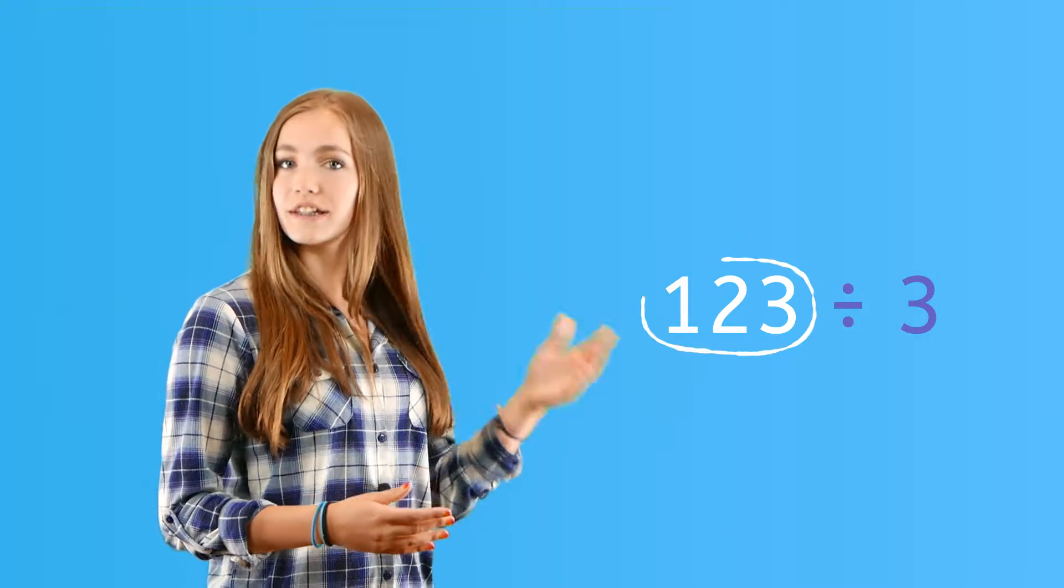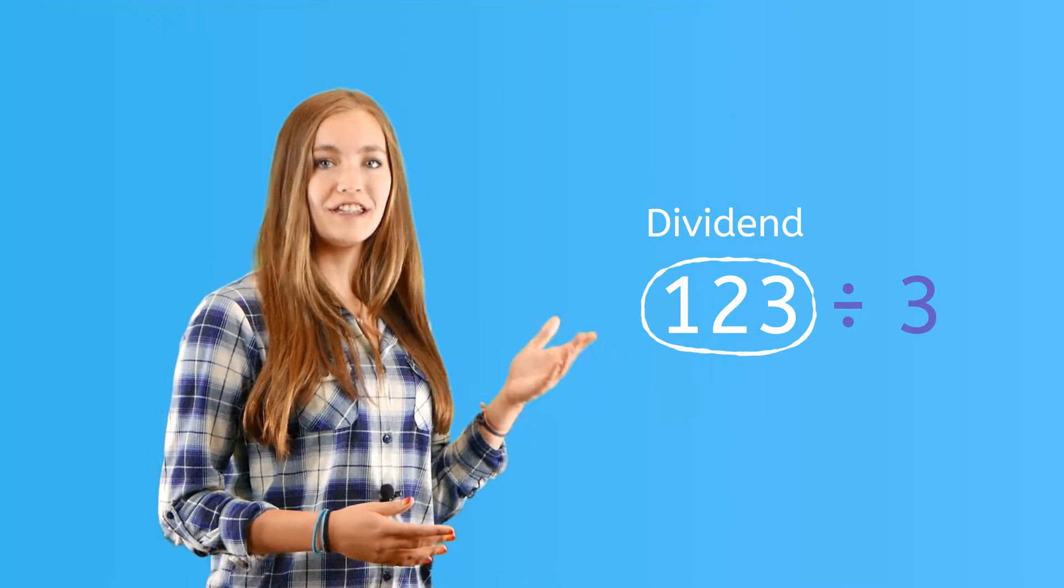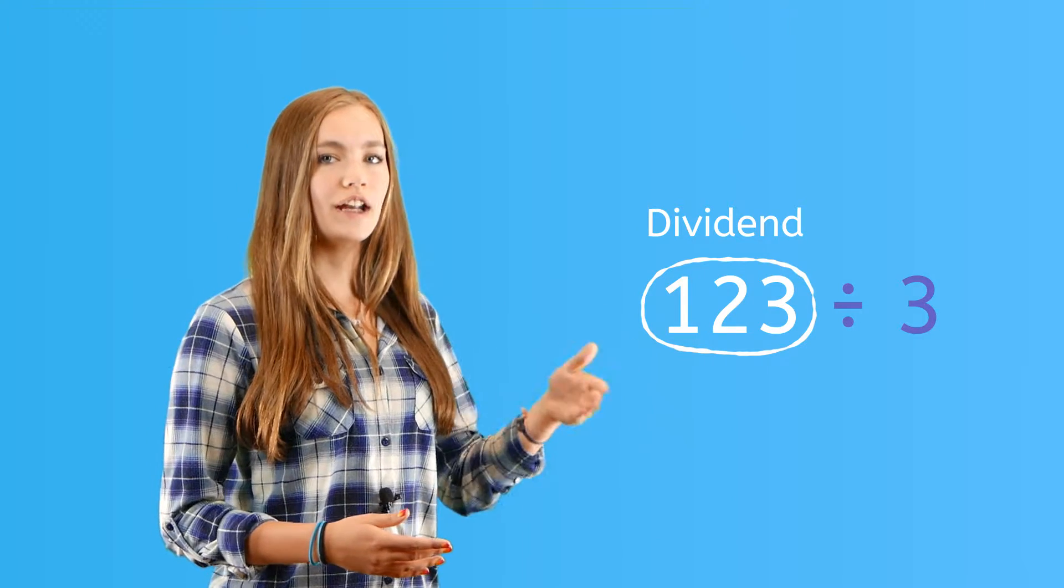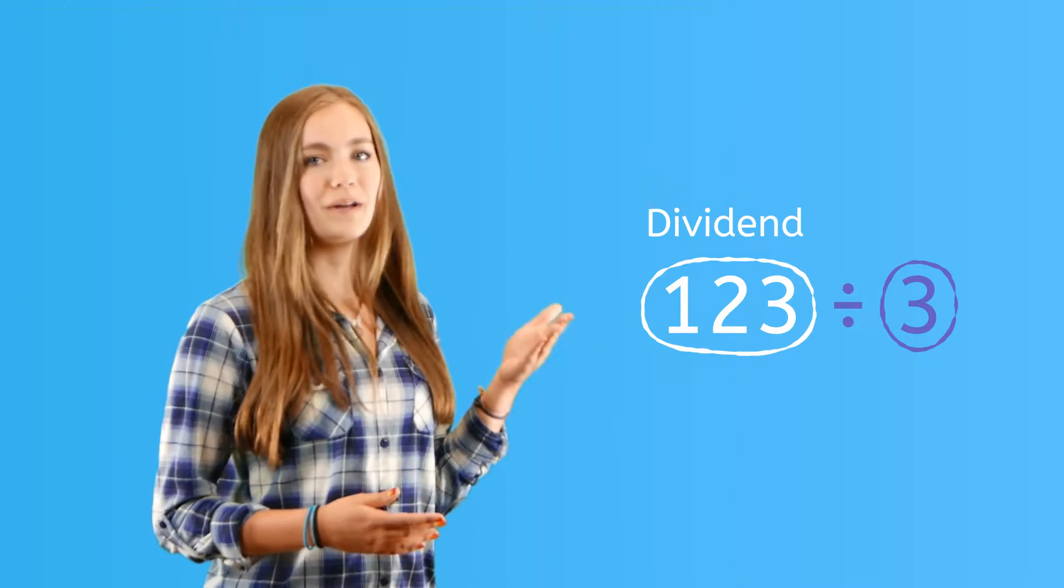So let's get started. We're going to start with the divisibility rule for the digit 3. To find this rule, we just have to add up the numbers in the dividend. And remember, the dividend is the number that you're dividing into, and see if that number is divisible by 3. This is pretty confusing, so let's do an example.